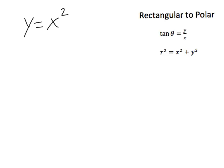So say for example they want you to convert the equation y equals x squared from, notice this is in rectangular form and they want you to convert it to polar form. This type of equation is something you've seen since algebra 1. You know that's a parabola.